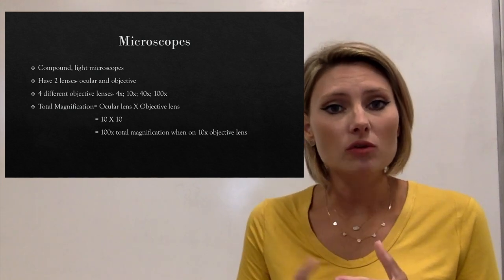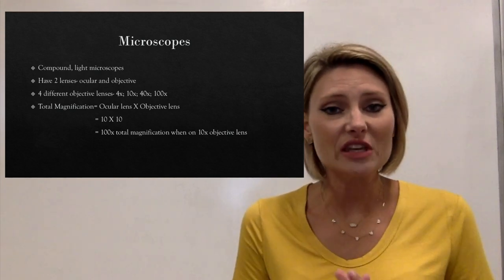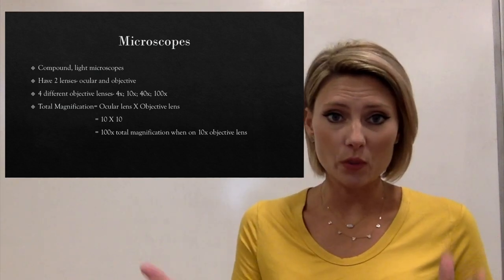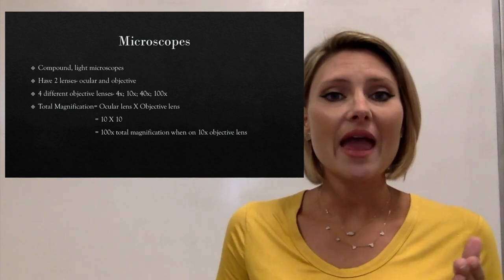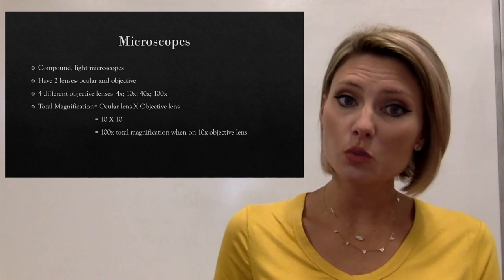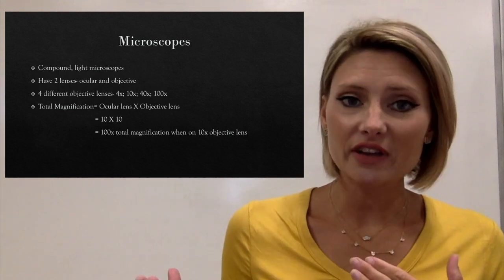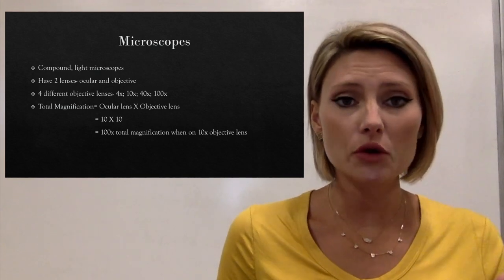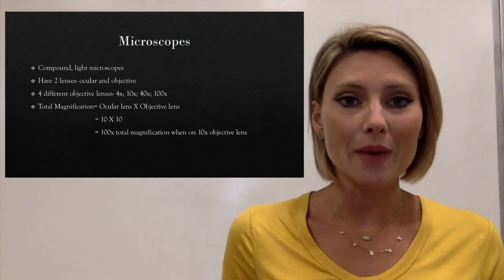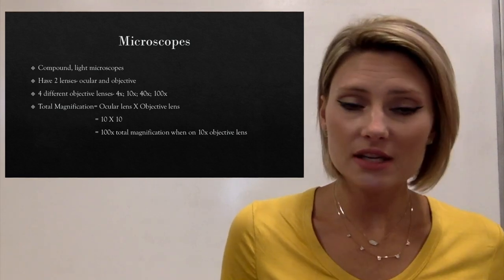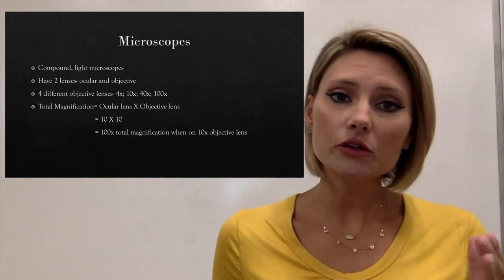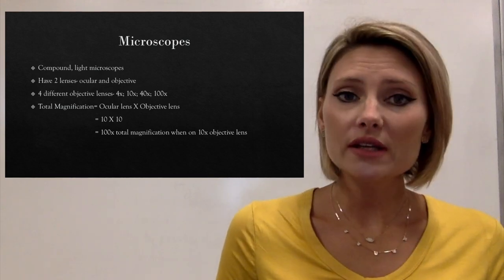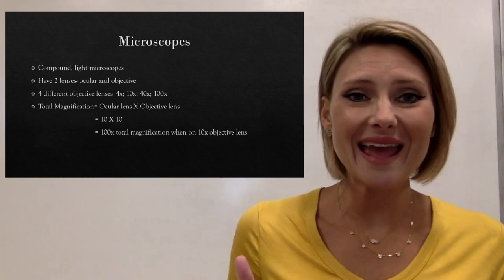Since they're a compound microscope, we have to be able to get the total magnification. Our microscopes are magnifying things and they're resolving things. So we have a total magnification equation and we have a resolving power equation. The total magnification equation is very easy and straightforward — it is simply the ocular lens multiplied by the objective lens.